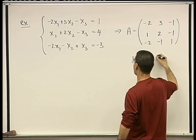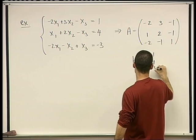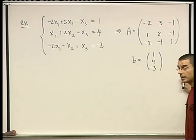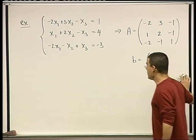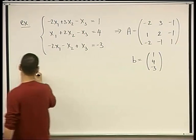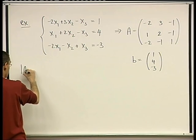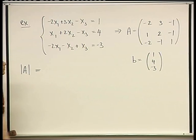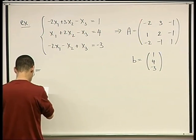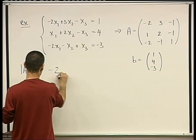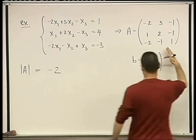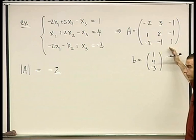B is the vector 1, 4, negative 3. And now we need to calculate four things. We need to calculate the determinant of A. And I'm not going to calculate it. You can do it. It ends up being negative 2. We know how to calculate a 3 by 3 determinant.